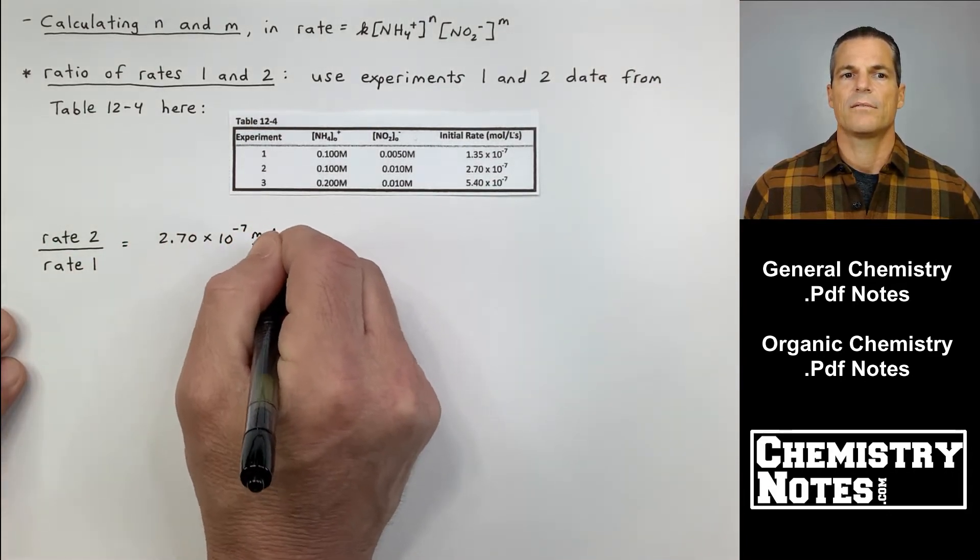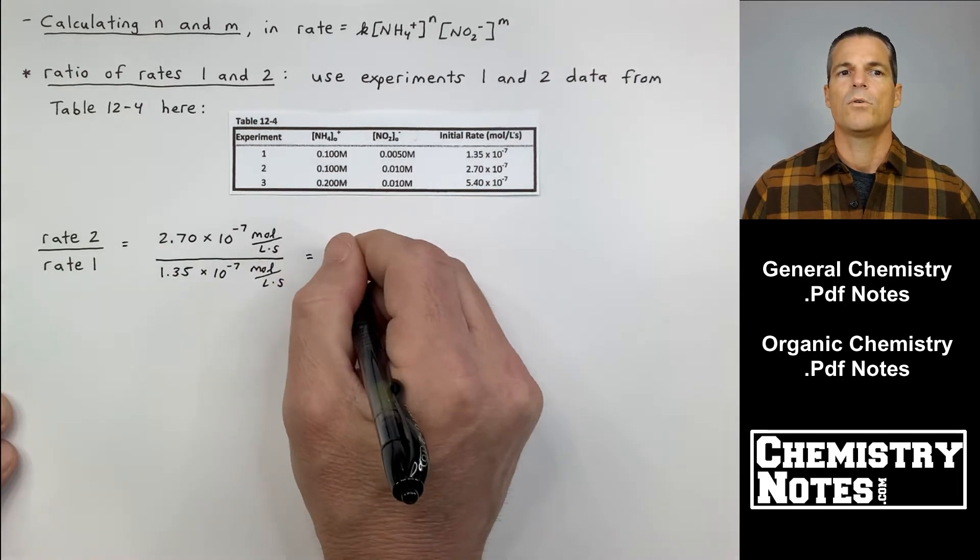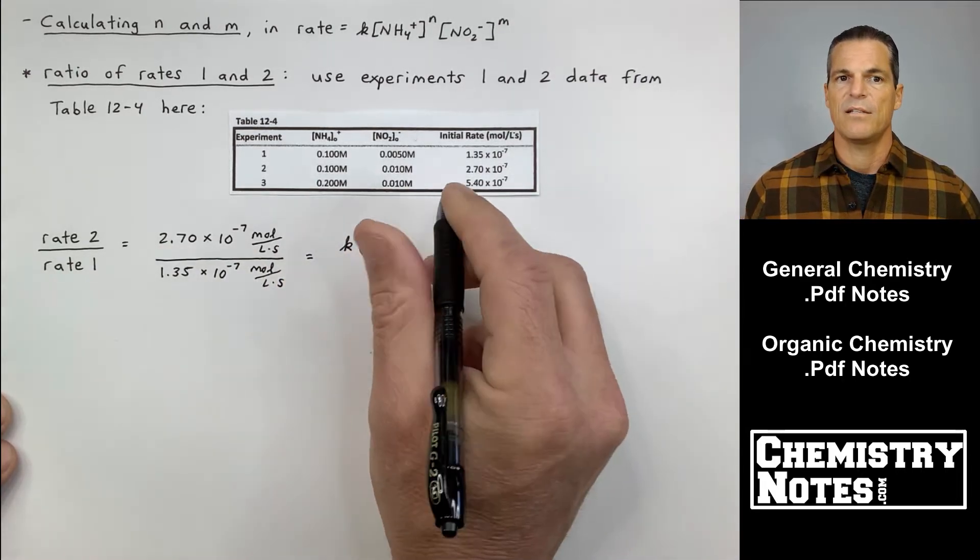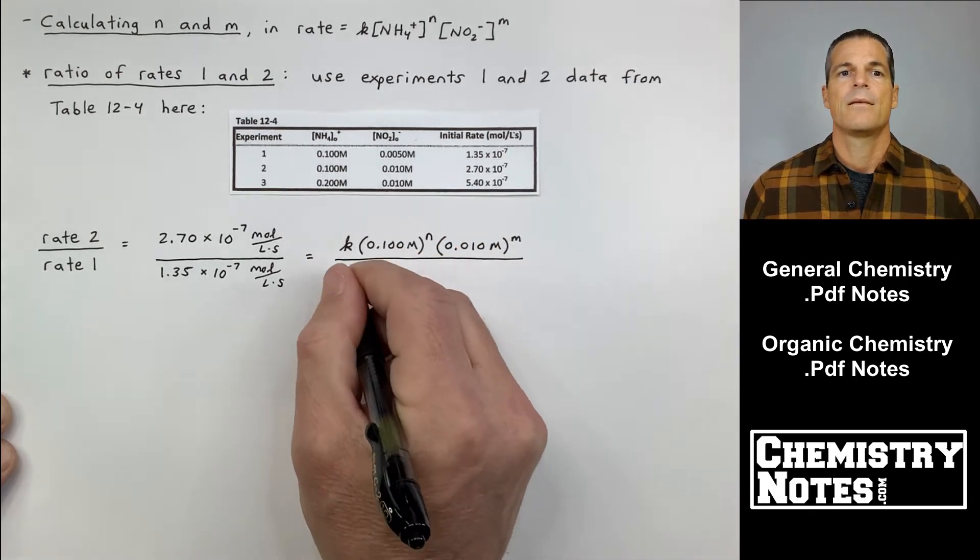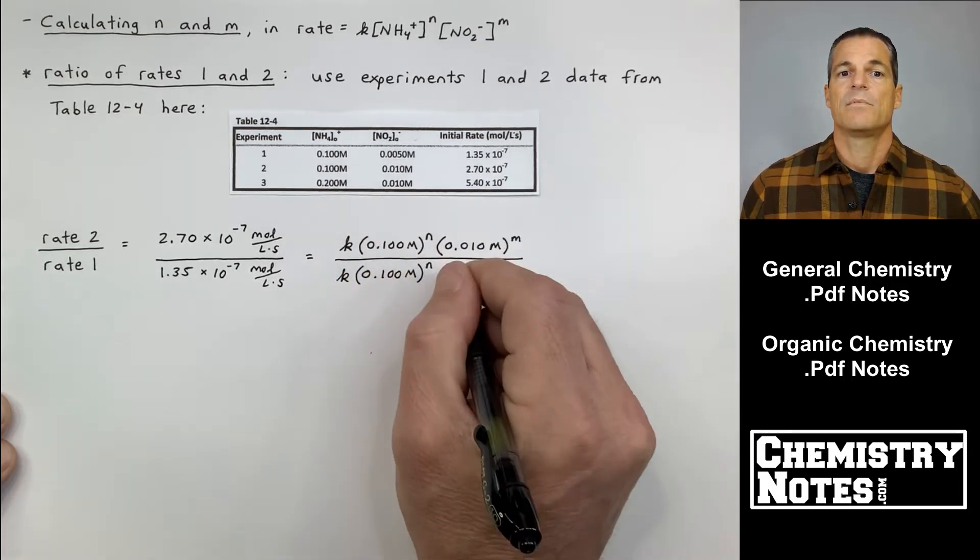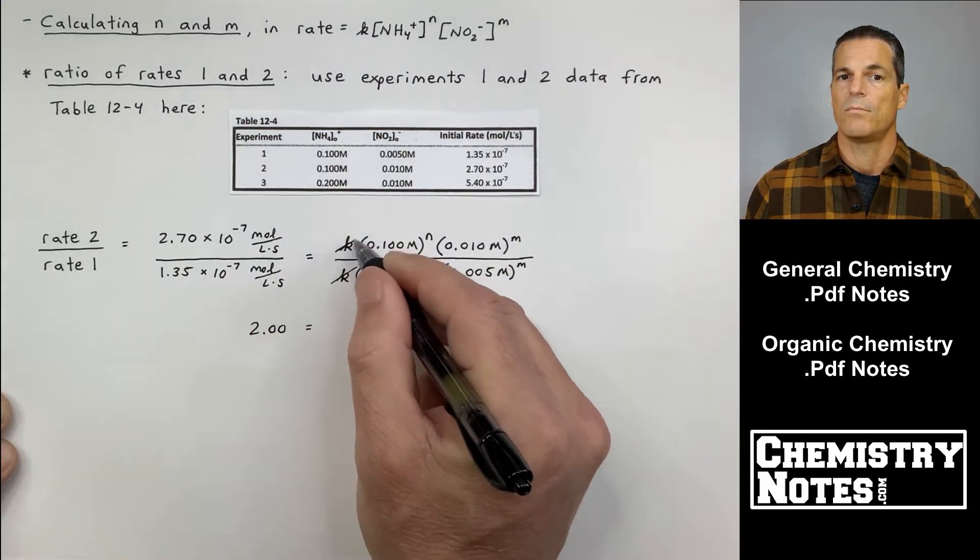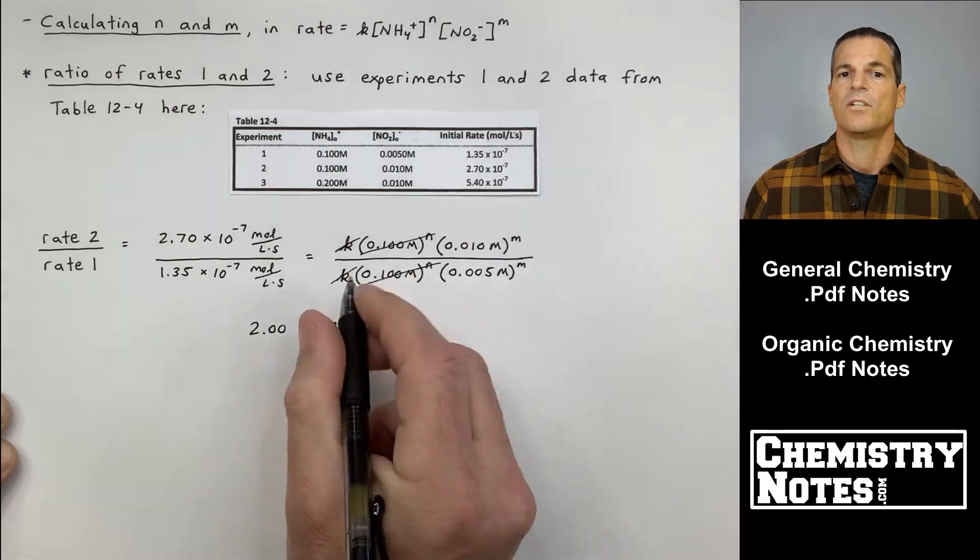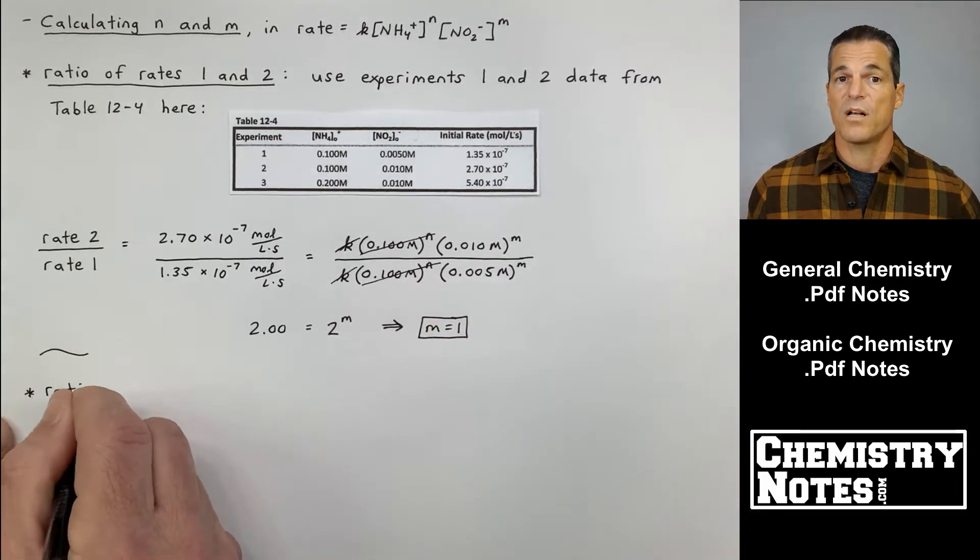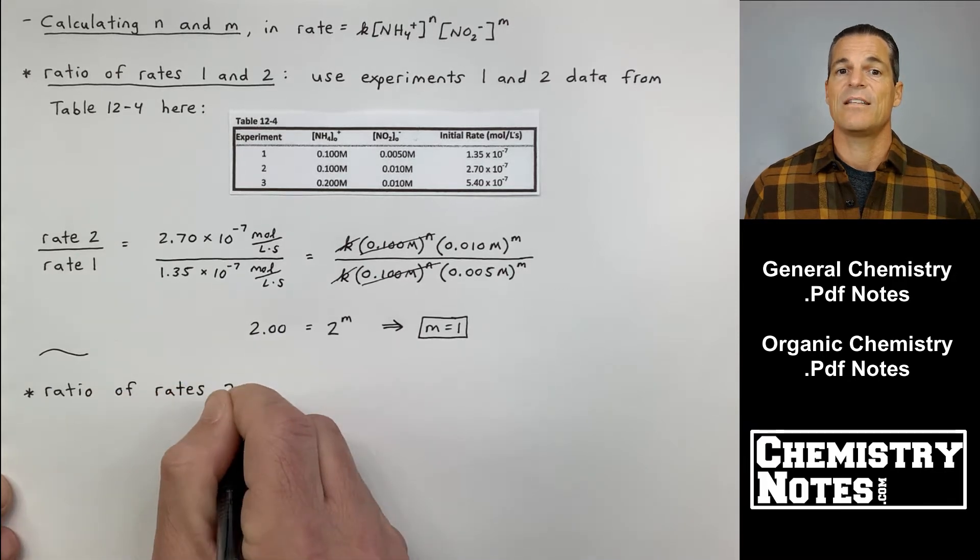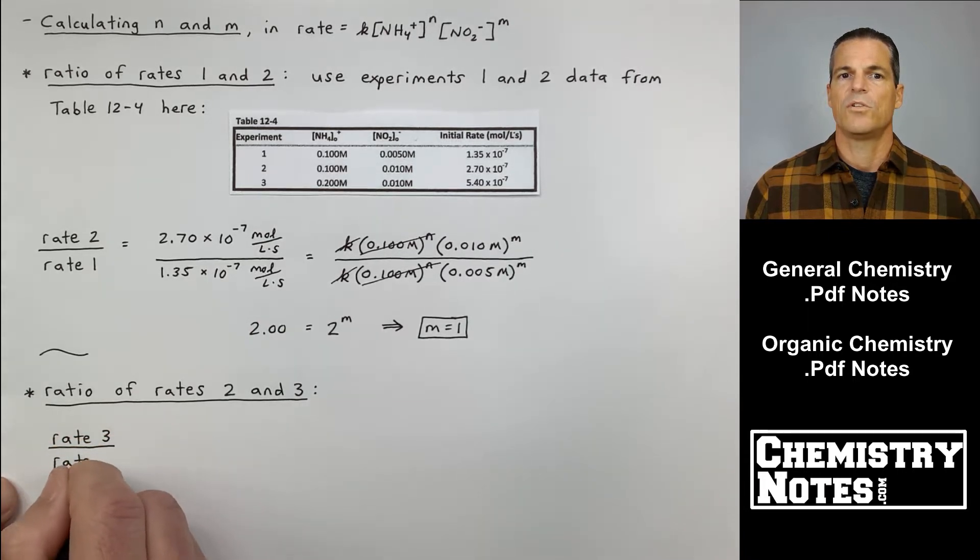Let's use experiments one and two of the three experiments in the data table. If I take rate two over rate one, by the way I can do rate one over rate two as well, it doesn't matter. But if I do rate two over rate one and put those reaction rates in: 2.70 times 10 to the minus 7 over 1.35 times 10 to the minus 7.